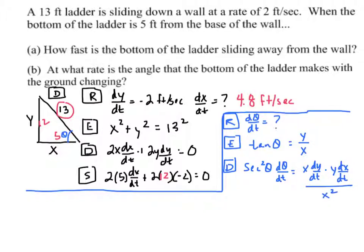So as I go to substitute and solve, let me start with the right side, the quotient rule side, because I know that x was 5, dy dt was negative 2, y was 12, and dx dt was 4.8, all over 5 squared.